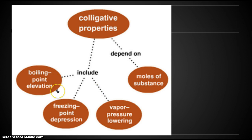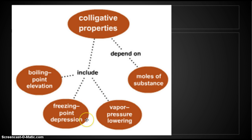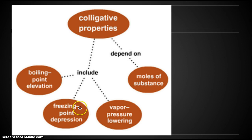Boiling point elevation — what does elevate mean? It means goes up. So when we have solutions, it's going to cause the boiling point to go up and be higher than the pure solvent. Freezing point depression — what does depress mean? It means down, lower. So freezing point depression means the solution's freezing point is going to be lower than the original solvent's freezing point. We're causing a freezing point lowering. And then we'll get to vapor pressure in a little bit.